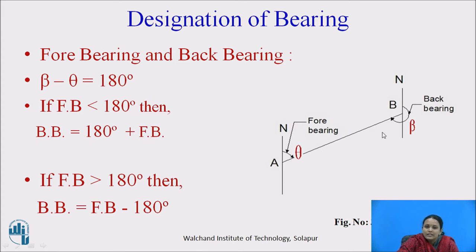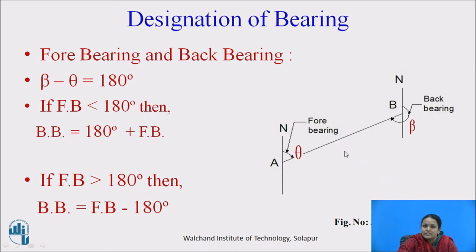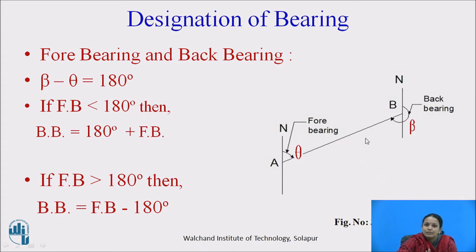For one survey line, we will get two bearings: the fore bearing and the back bearing. When you start from the first station to the second station — that is, from A to B — the fore bearing of line AB is theta with respect to the north direction. When you travel from station B to A, it is called the back bearing of line BA with respect to the north.